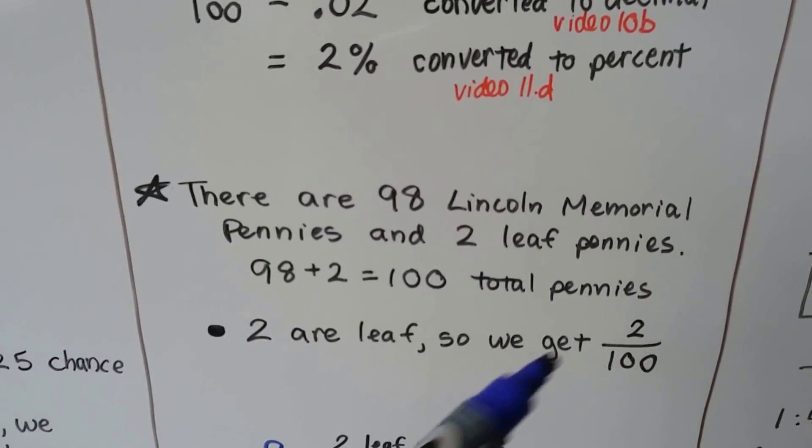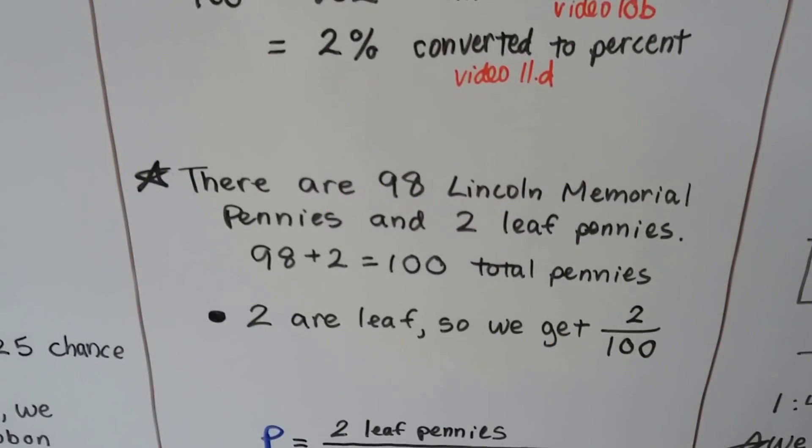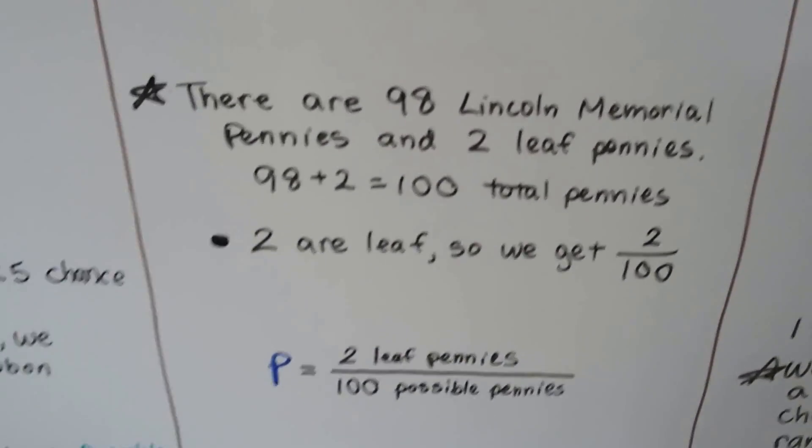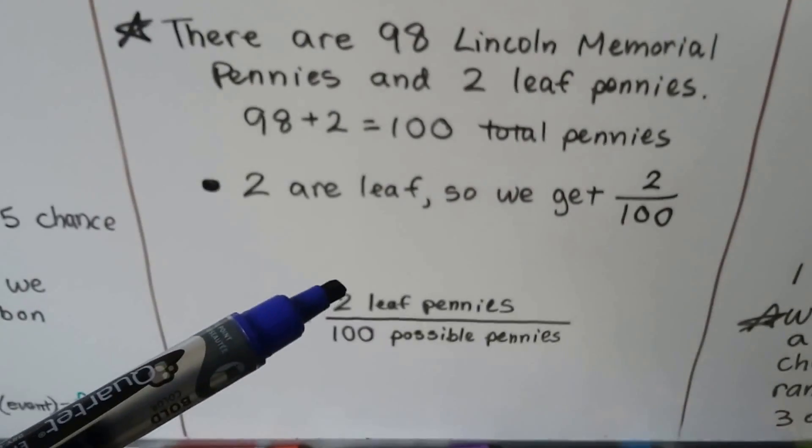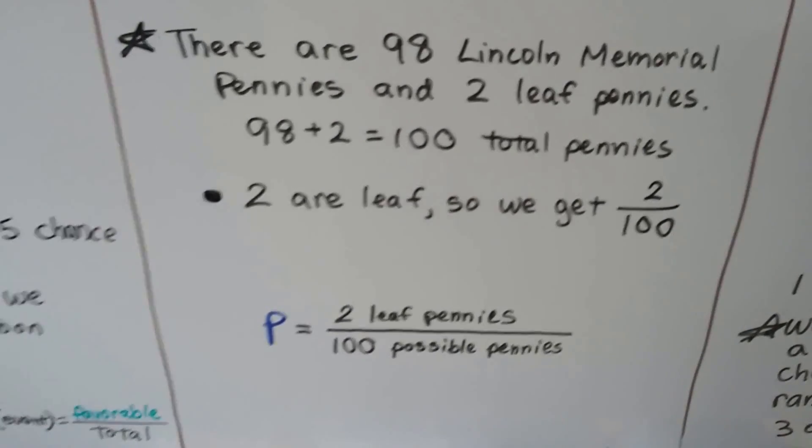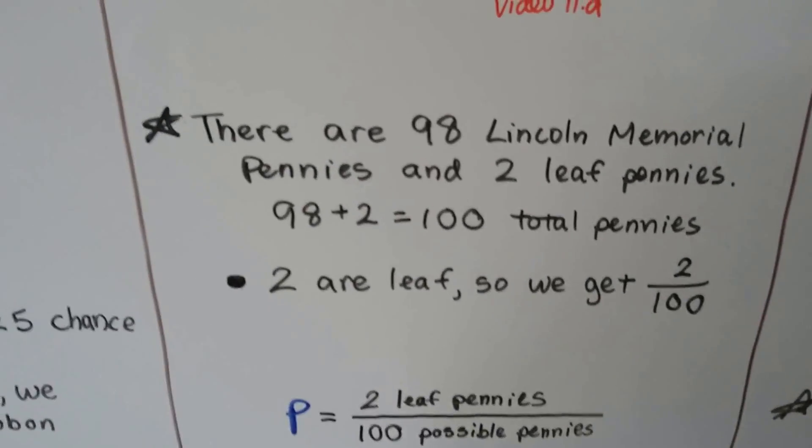So, because two are a leaf, we have two out of 100. Two one-hundredths. The probability is two leaf pennies out of 100 possible pennies. That's probability.